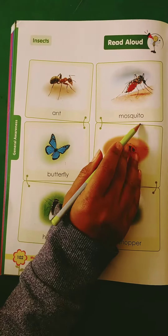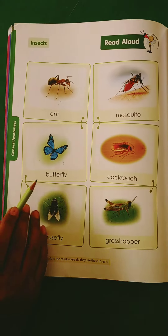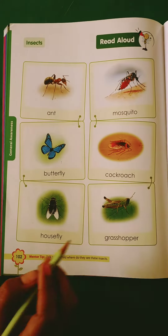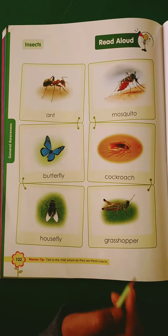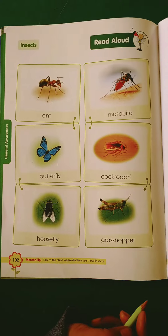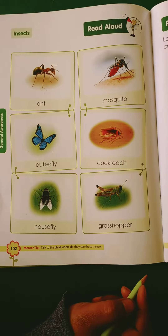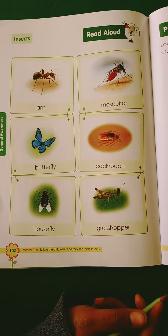Again: ant, mosquito, butterfly, cockroach, housefly and grasshopper. So learn any 5 names of insects.